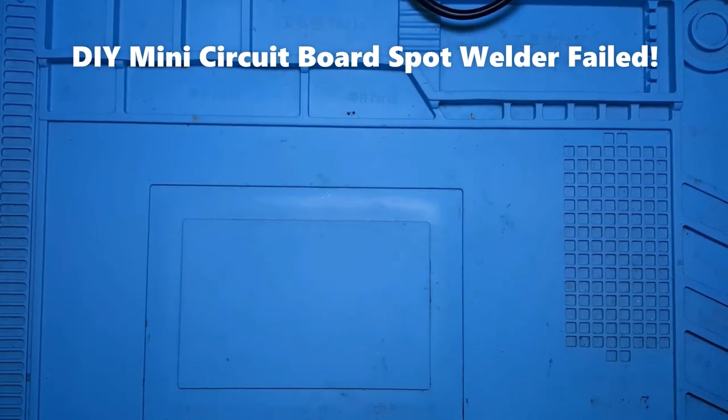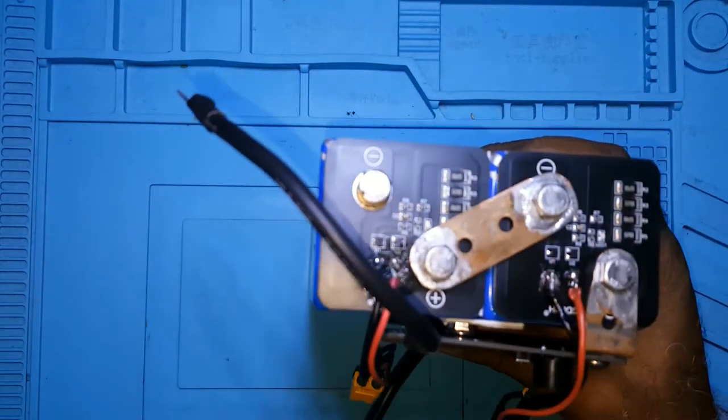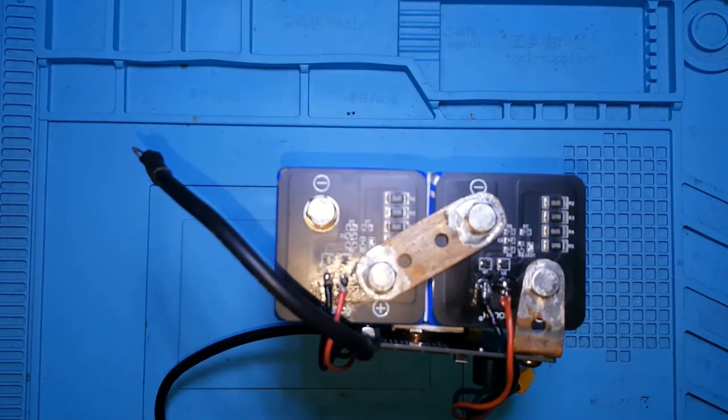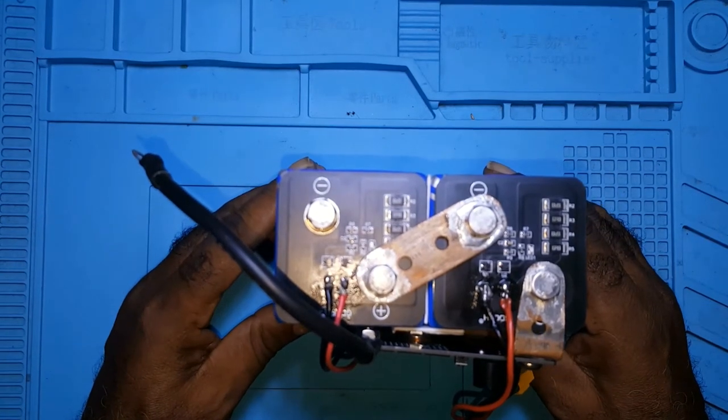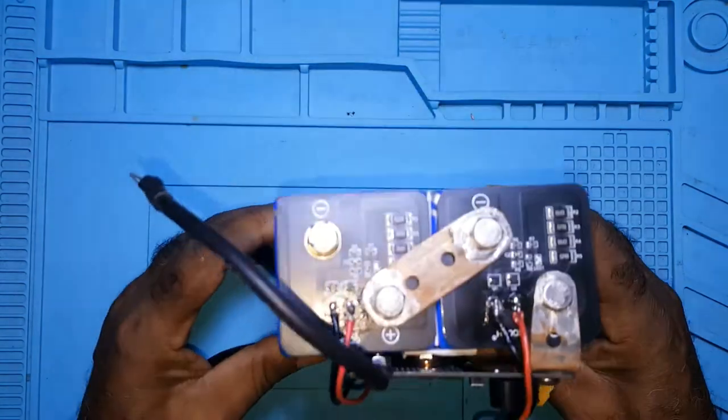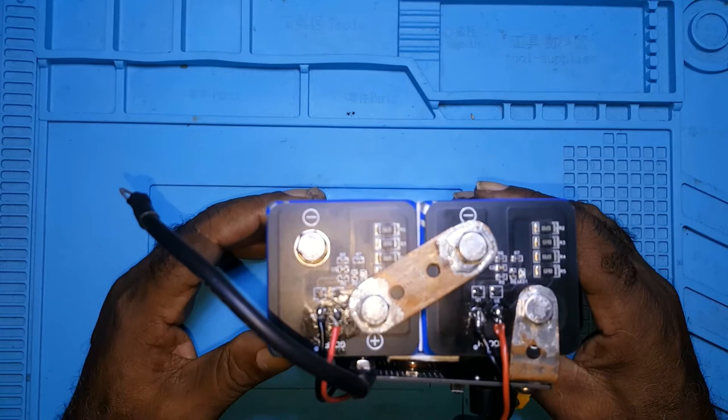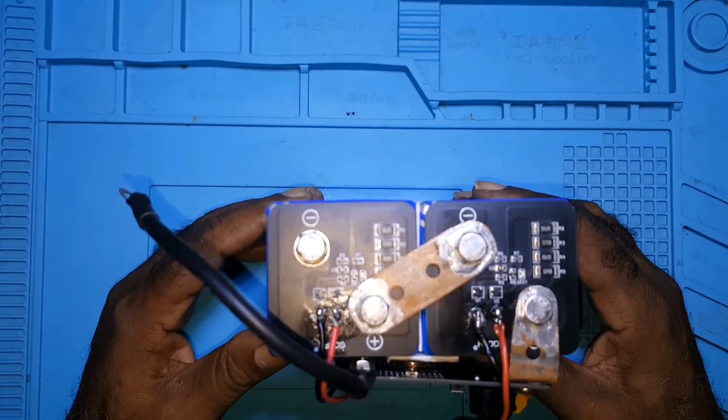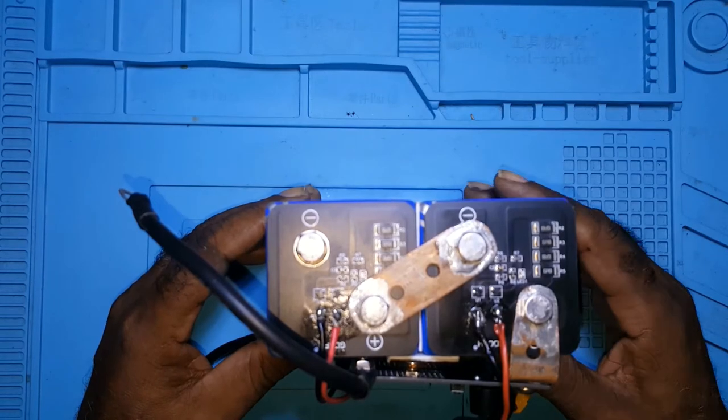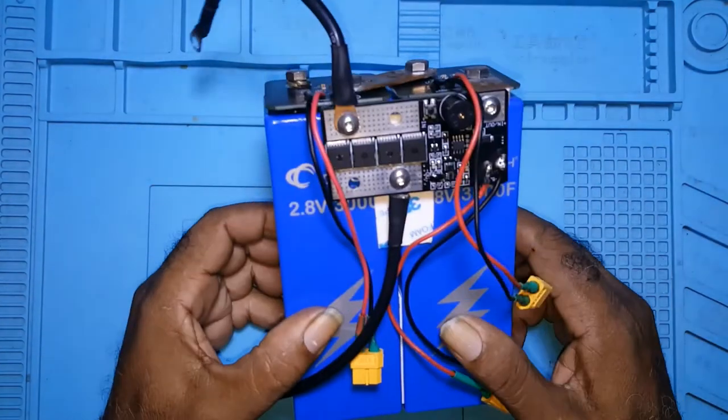Howdy, this is my fourth video on the DIY circuit board spot welder kit assembly. This is the unit assembled, but it failed. In the second video, I said I would go through what I did and what came out of it. This is the board.